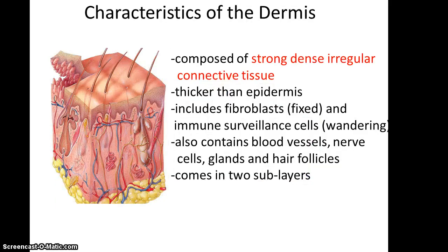Now we're going to move on to the dermis. This is the layer that is below the epidermis. It is composed of strong, dense, irregular connective tissue. It is much thicker than the epidermis, and it includes such cells as the fibroblasts, which help maintain the strong, dense, irregular connective tissue, as well as immune surveillance cells that wander throughout to engage in phagocytosis. It also has blood vessels, nerve cells, glands, and hair follicles.